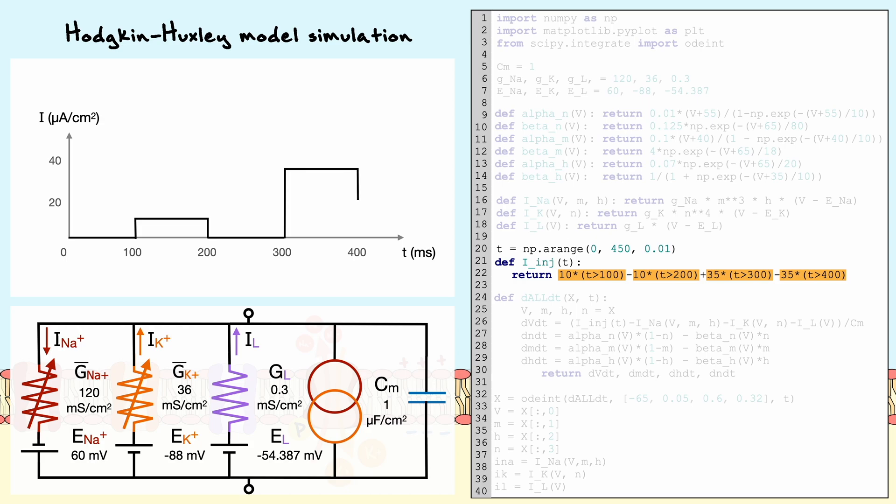Between the 300 and 400 millisecond intervals, the same logic applies, but this time the value of the current goes up to 35 microamperes per centimeter square. Then, after 400 milliseconds, the current is turned off, which gives this general shape of the current injection as a function of time.